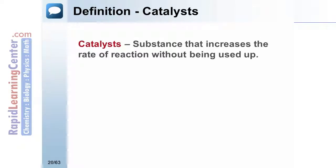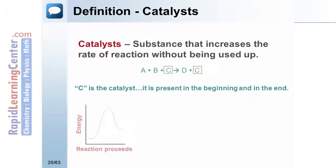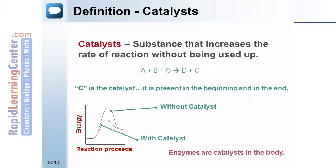Catalysts speed up a reaction. They are not used up themselves in the reaction. They are present in the beginning and the end. Catalysts lower the activation energy of a reaction. This means more collisions will be successful as they don't need as high of energy. Enzymes are an example of catalysts in our bodies.